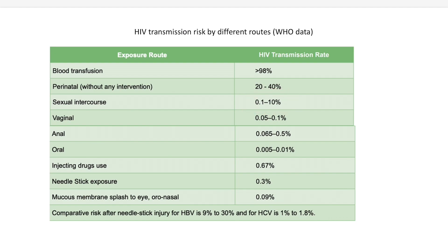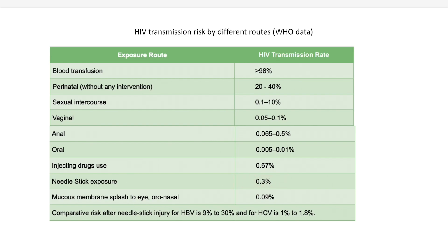In vaginal intercourse it is 0.05 to 0.1 percent. In anal it is 0.065 to 0.5 percent, and oral is very negligible at 0.005 to 0.01 percent. Injectable drug usage also carries the risk of HIV transmission at around 0.67 percent. Needle stick exposure, which is the most common way for interns, is 0.3 percent, and mucous membrane splash to the oro-nasal area is 0.09 percent.